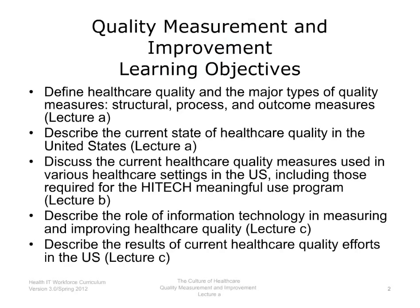The objectives for Quality Measurement and Improvement are to: define health care quality and the major types of quality measures — structural, process, and outcome measures; describe the current state of health care quality in the United States; discuss current health care quality measures used in various settings, including those required for the HITECH Act Meaningful Use Program; describe the role of information technology in measuring and improving health care quality; and describe the results of current health care quality efforts in the United States.